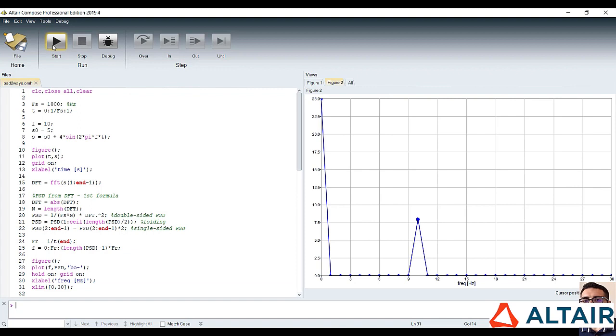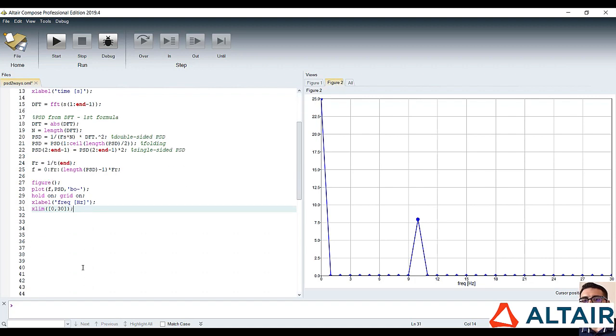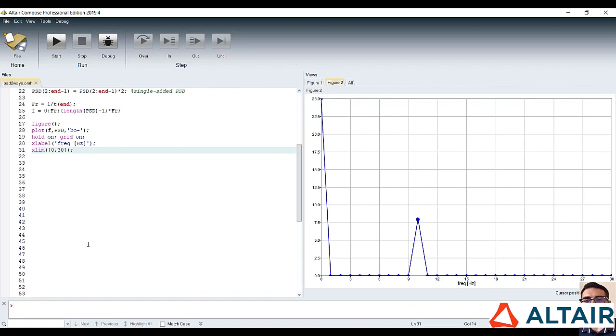We can see that there are two peaks, one for the mean value of the signal, as it is located at 0 Hz, while the other one for the 10 Hz component.